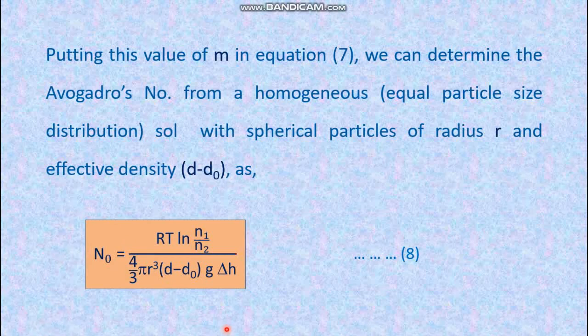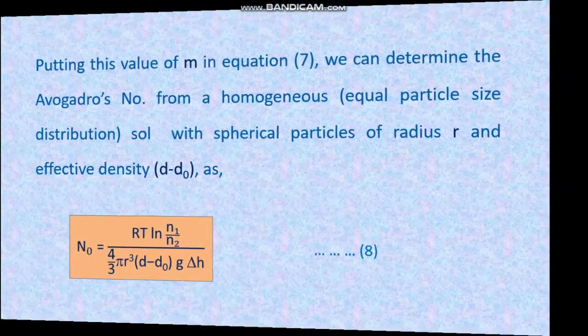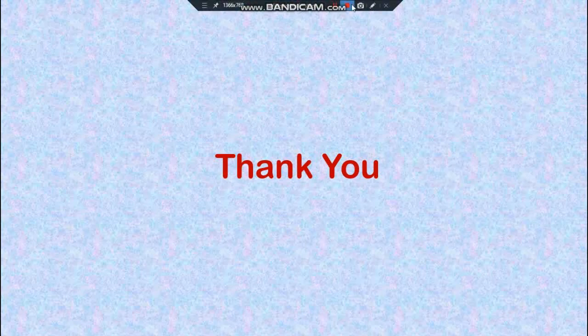So this is Perrin's method of determining Avogadro's number. This concludes our first class of Colloidal Chemistry. Take care of yourself, and I wish you all the best. Thank you.